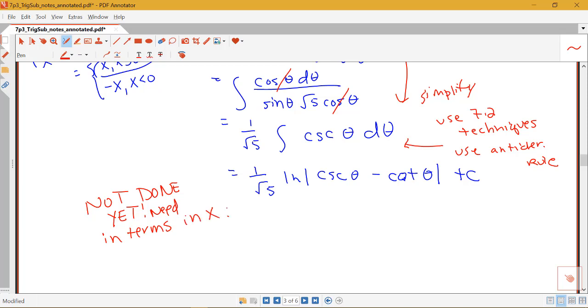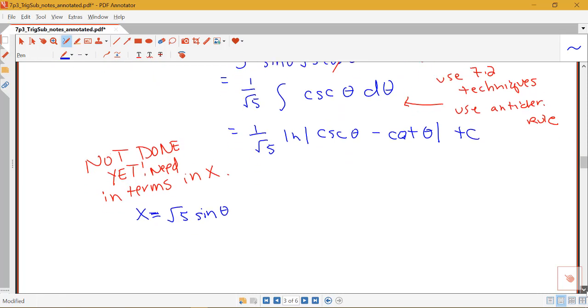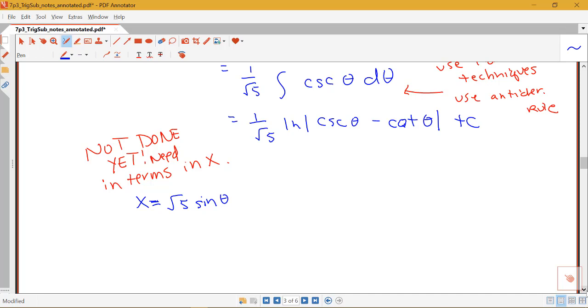So how are we going to get this back in terms of x? When we had u substitution before and I had some kind of antiderivative I found in terms of u, well, I could just look back and see what u was in terms of x. But here it's a little bit backwards, remember, because we have an inverse substitution. So here we had x was equal to root 5 sine theta. So I need to figure out what theta is in terms of x. But actually what I want to really know is what some trig functions of theta are in terms of x.